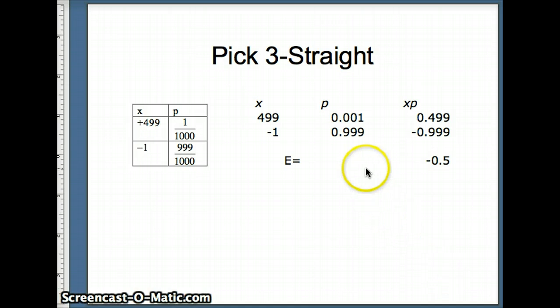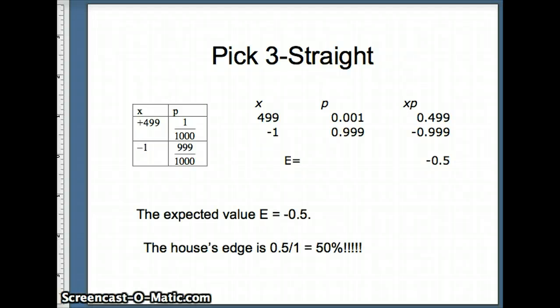Here's our numbers. X times P, 0.499. X times P, negative 0.999. This time, the expected value is negative 0.5. The house keeps a half a dollar for every dollar that's wagered. In this situation, the house's edge is a ridiculous number of 50%.